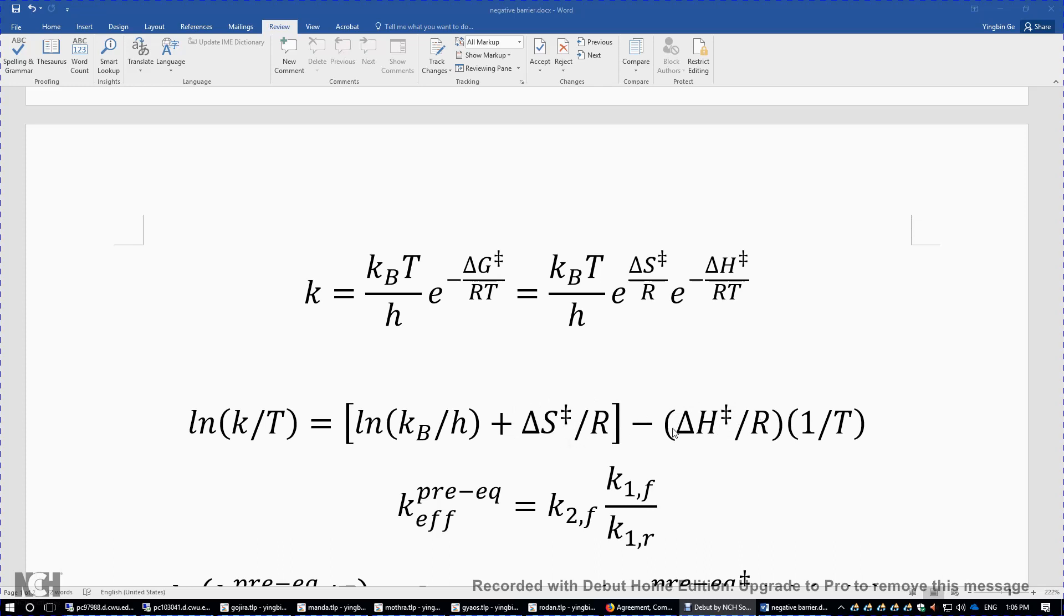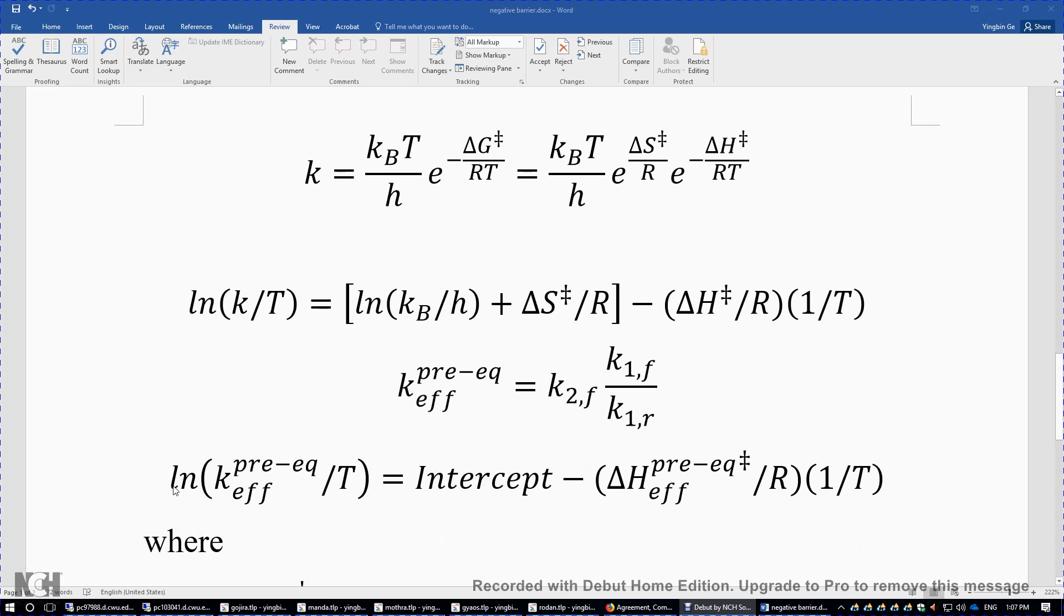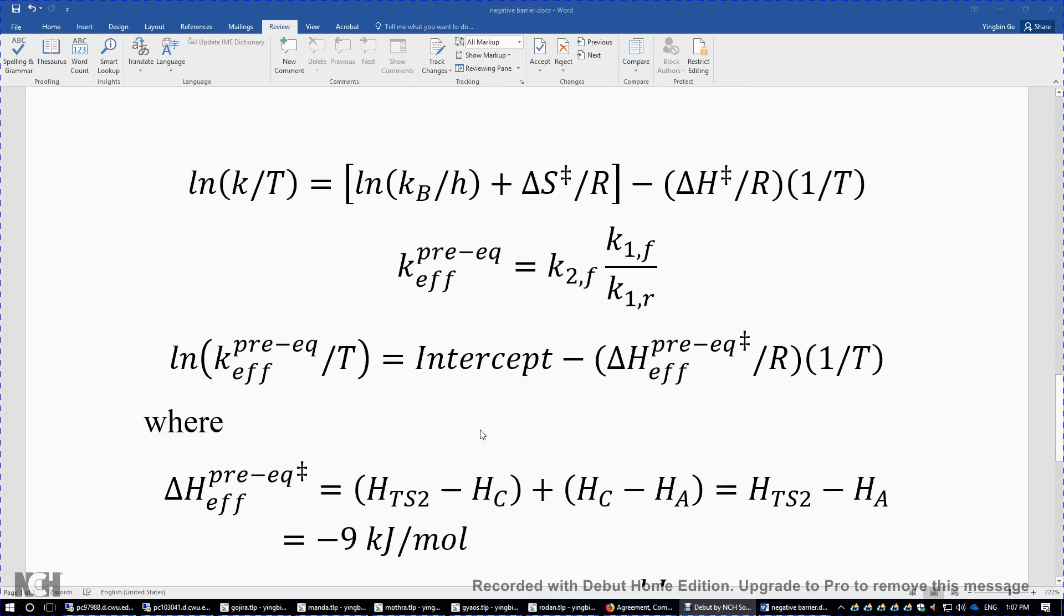We look at the equation for effective rate constant: keff^(pre-eq) = K2,f × K1,f/K1,r. We combine the three terms together. We find that the natural logarithm of the effective rate constant over T is proportional to 1 over T, this time with a slope negative ΔHeff^(pre-eq)‡ over R. This ΔH‡ is independent of temperature within a moderate temperature range.